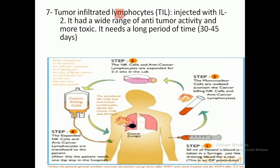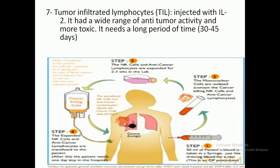Another type of tumor immunotherapy uses TIL cells, which stands for tumor infiltrating lymphocytes, combined with interleukin-2. This approach has a wide range of anti-tumor activity but is more toxic and requires a long period of time — 30 to 45 days. In this method, the patient undergoes surgery to extract and remove the tumor mass.